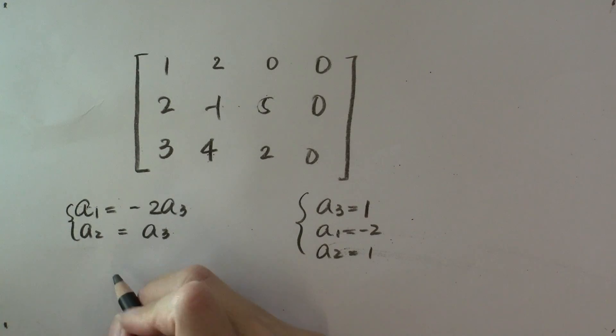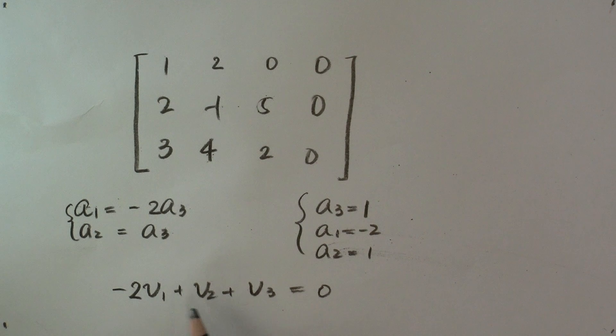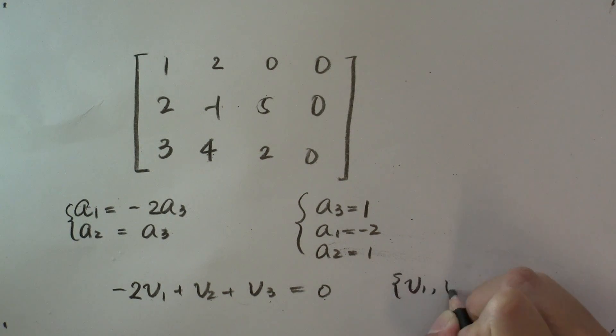And that is a set of coefficients satisfying this equation. So if we write it out, -2v1 plus v2 plus v3 is equal to the zero vector. And since we found a set of coefficients that are not all 0 satisfying this equation, then by definition, the vectors v1, v2, and v3 are not linearly independent. So we say v1, v2, v3 are linearly dependent.